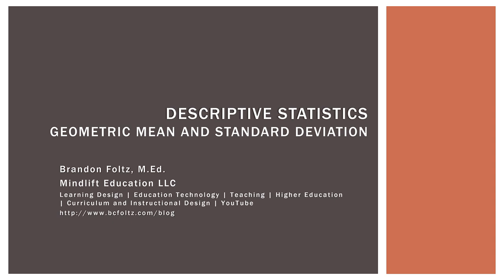This video is the next in our series on descriptive statistics, and it is about the geometric mean and standard deviation. In my experience, the geometric mean is often skipped over in many stats classes, and I think that is very unfortunate. It's actually pretty cool and interesting, but also extremely useful, especially in business when dealing with rates of return on investments or other financial instruments. It's also useful in disciplines like biology, medicine, agriculture, or any discipline dealing with growth rates over periods of time.